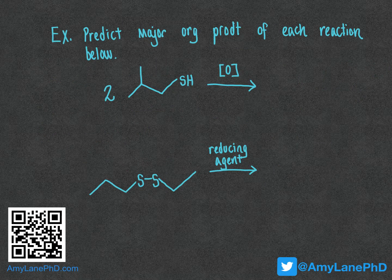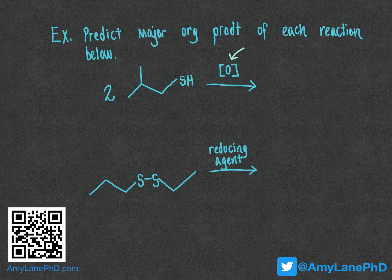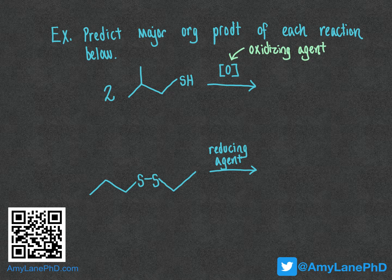Now let's try applying this basic information toward some problems like the type you would encounter on assessments in the class. We are asked to predict the major organic product of each reaction shown below. When we say the major organic product, that is the final result of mixing together two thiol molecules and treating with [O]. O in brackets refers to our generic way of denoting an oxidizing agent — the same terminology used when oxidizing alcohol molecules. The general rule is: oxidation of thiols yields disulfides.